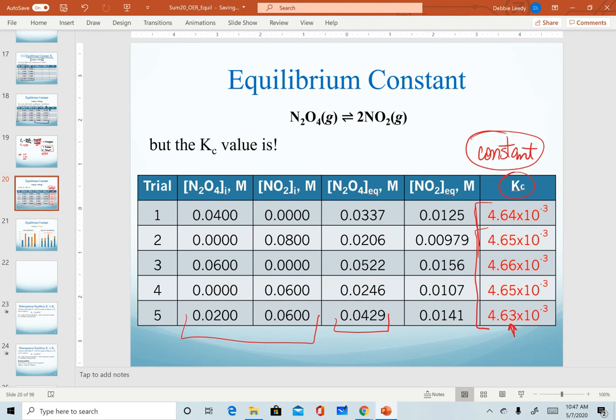So again, at a given temperature, the ratio of my products to reactants for a given reaction will always be constant.